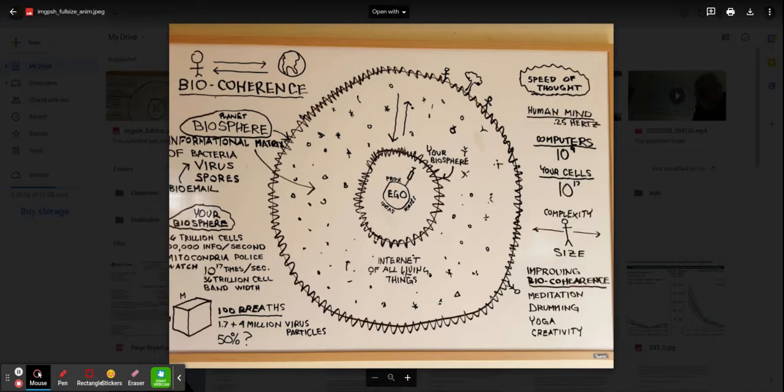We have the big wiggly circle. It's the biome of the whole planet. And we have the little wiggly circle, the biome of you.